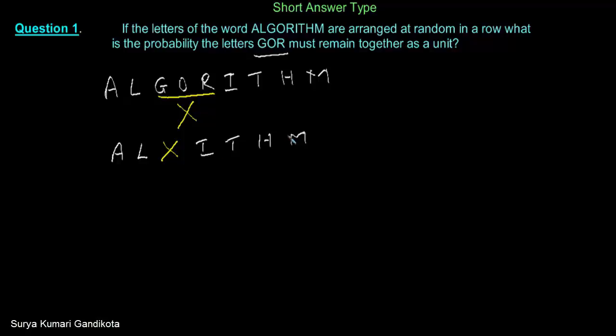I need to find the probability of the arrangement of these letters in a row. What is the total number of letters given in this word ALGORITHM? 1, 2, 3, 4, 5, 6, 7, 8, 9. There are total 9 letters here we have.